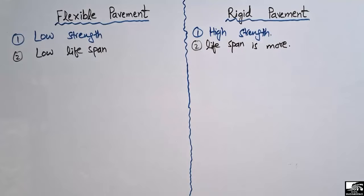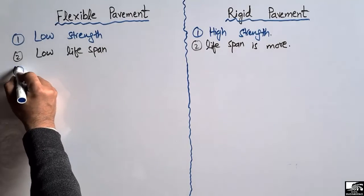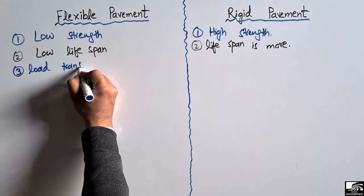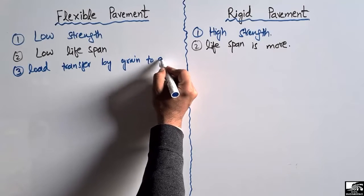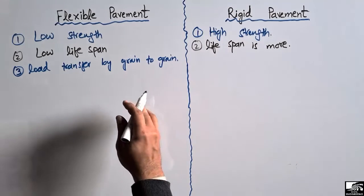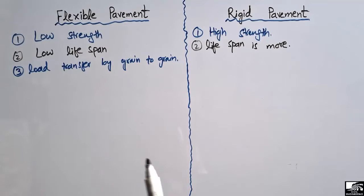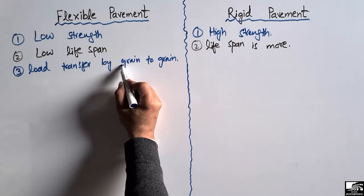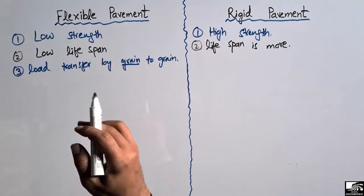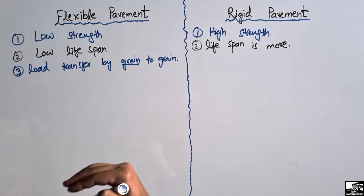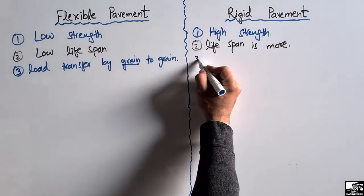The third difference is load transfer by grain-to-grain mechanism in case of flexible pavement. Because there are different layers in flexible pavement, each layer transfers the load through its material. This is called grain-to-grain mechanism, where material grains transfer the load from one grain to another, from the top layer down to the bottom layer.